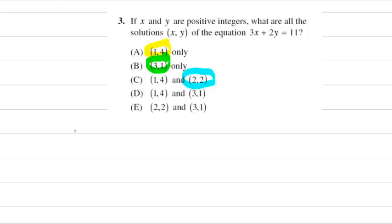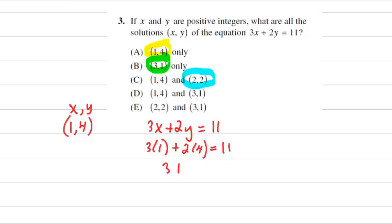If I do 1 comma 4, I'm going to take the function 3x plus 2y equals 11. Since this is in the format of X comma Y, I'm going to plug in 1 for my X and 4 for my Y. 3 times 1 plus 2 times 4 equals 11. That's 3 plus 8 equals 11. 11 equals 11. That worked out. So 1 comma 4 is definitely one of the solutions.